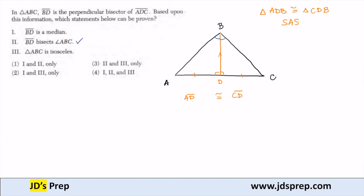We also know that BD must be a median, so that's true. So I know one and two are true. Now let's look at three. ABC is isosceles. In order to be isosceles, the two sides must be equivalent in length.